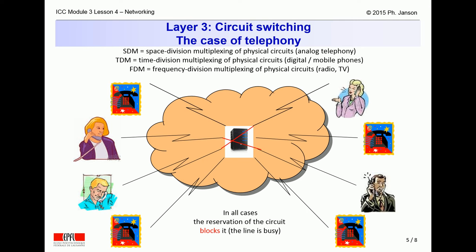In former telephone switches, the connection of a phone conversation through the network was done through what is called circuit switching. Electrical wires from the calling party to the called party were effectively connected to one another end-on-end, building a complete electrical circuit through the intermediate telephone switches. During the whole connection, both calling and called parties, as well as all intermediate lines, were busy. This was called space division multiplexing, because spatially distinct intermediate lines would be used over time by different subscribers.